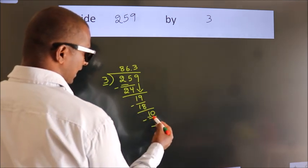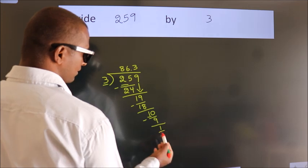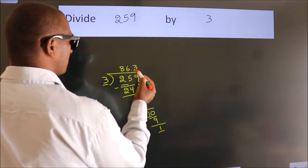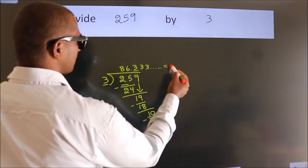Now you observe. We had 1 here, and we got 1 again. That means this number keeps on repeating. So this is our quotient.